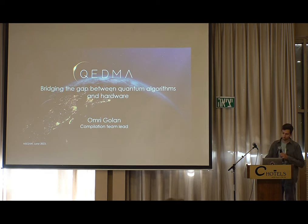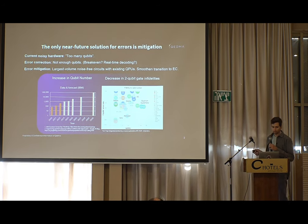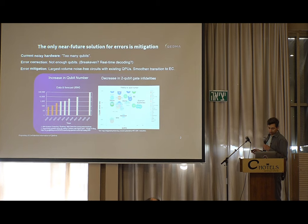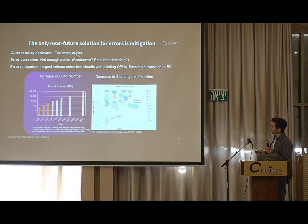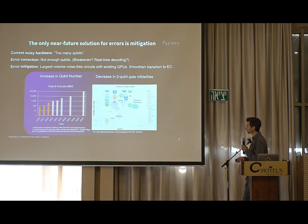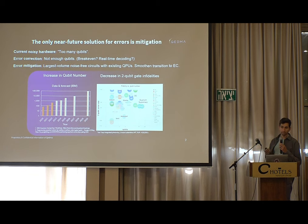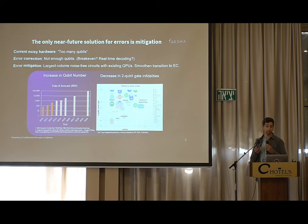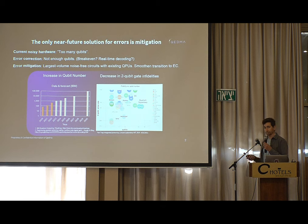I want to consider the state of current hardware. Everyone knows that current hardware has too many qubits, at least relative to existing error rates. As we've heard today, the world record for quantum volume corresponds to about 16 qubits, but we have devices which are tens to hundreds of qubits.